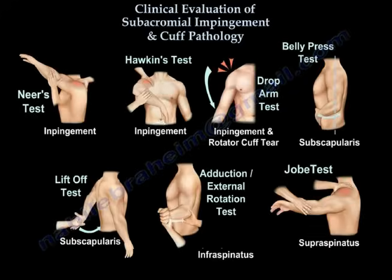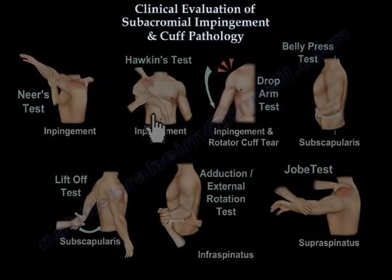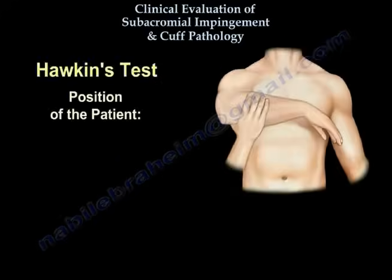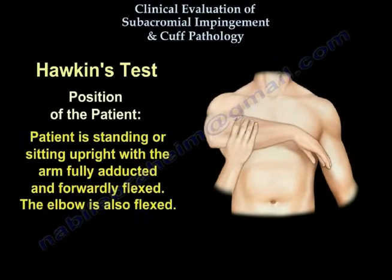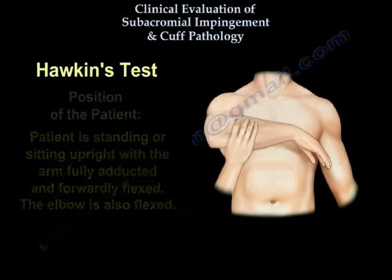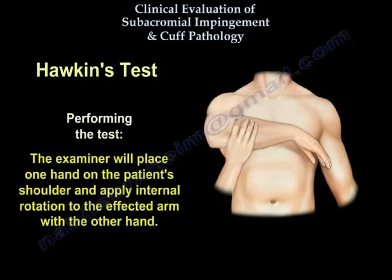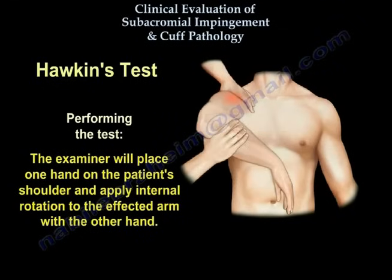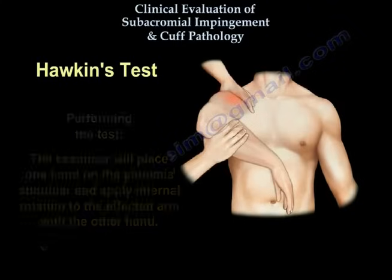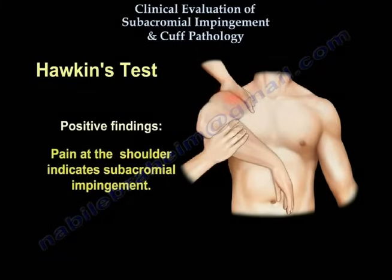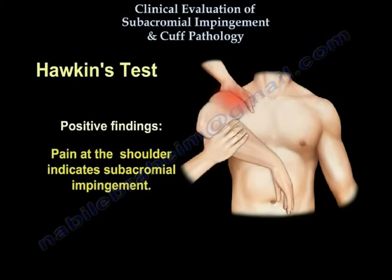The Hawkins test. Position the patient standing or sitting upright with the arm fully adducted and forwardly flexed, and the elbow also flexed. The examiner will place one hand on the patient's shoulder and apply internal rotation to the affected arm with the other hand. Pain at the shoulder indicates subacromial impingement.